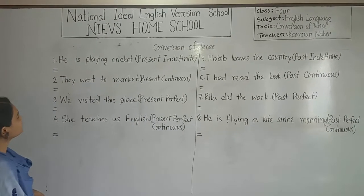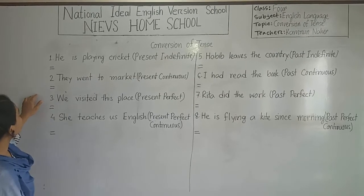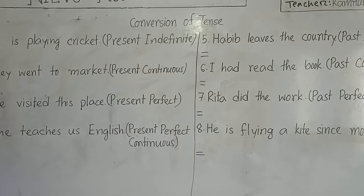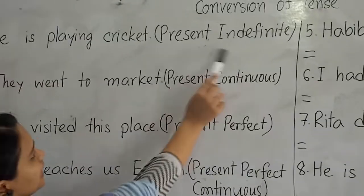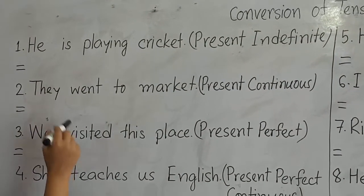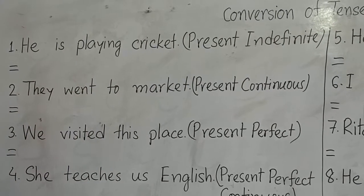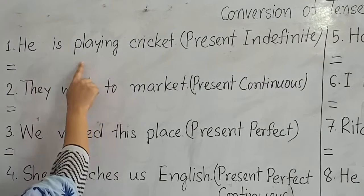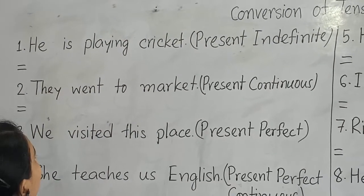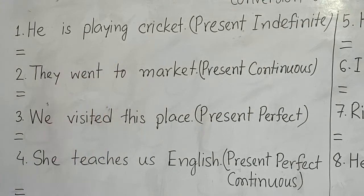We will change the tenses according to the given direction. Number one: 'He is playing cricket.' This was in the present indefinite tense. Now look at this sentence — here 'is' comes after the subject and the verb has '-ing', so this is in the present continuous form.